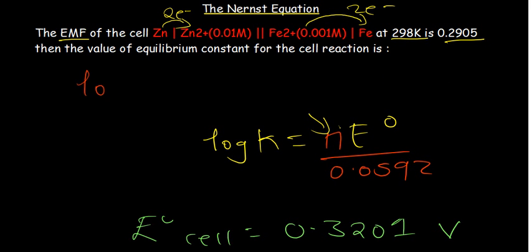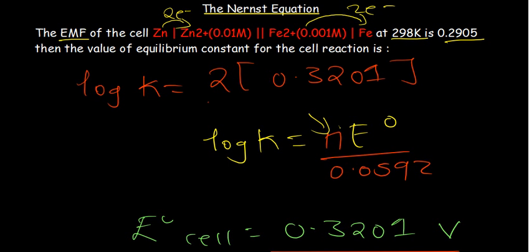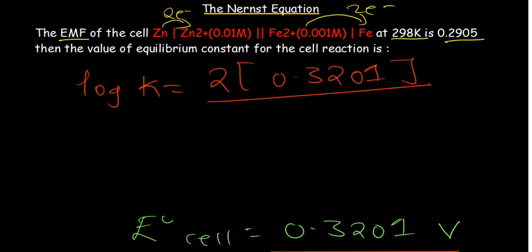Our log of K is going to be N, which is the number of electrons, 2, and then the standard cell potential which we've calculated is 0.3201, over 0.0592. Log has got a base of 10 there, so our K is going to be 10 to the power. We can multiply what we have: 2 times 0.3201 divided by 0.0592. I'm getting a value of 10.81, so 10 to that power.